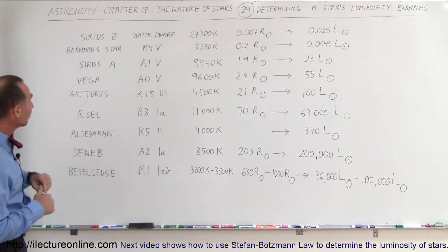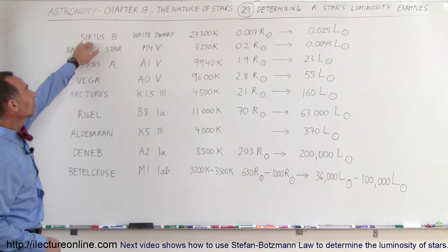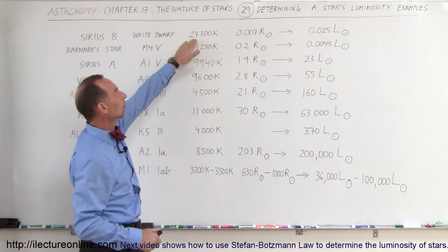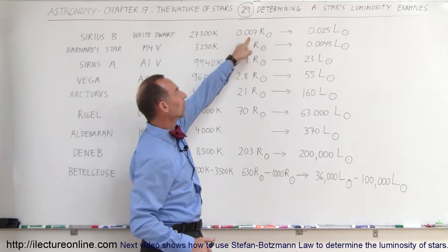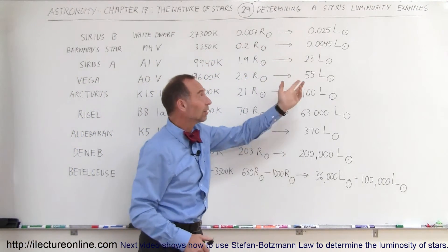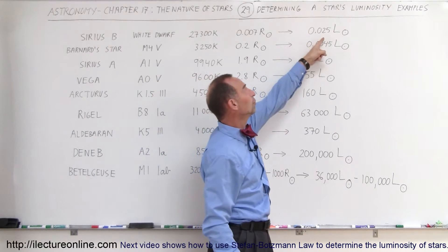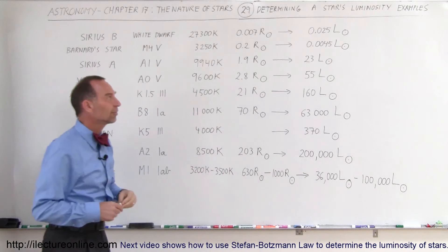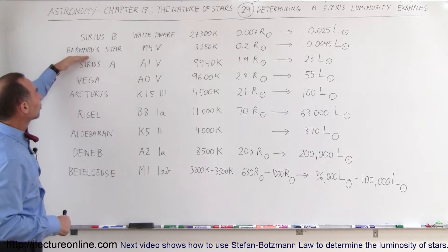We have a set of stars right here on the list starting out with Sirius B. Sirius B is a white dwarf, very small star, has a very high surface temperature but a very small radius. Corresponding to the luminosity relative to the Sun, it's 0.025 times the luminosity of the Sun or 2.5% the luminosity of the Sun.